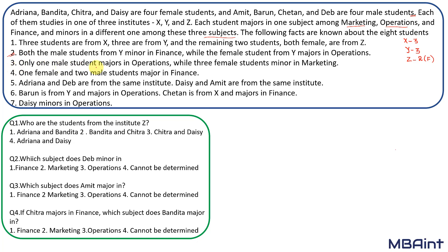The third point: only one male student majors in operations, while three female students minor in marketing. One female and two male students major in finance. Adrina and Deb are from the same institute, and Daisy and Amit are from the same institute. Adrina is female, Deb is male — they belong to the same institute. Similarly, Daisy and Amit belong to the same institute.